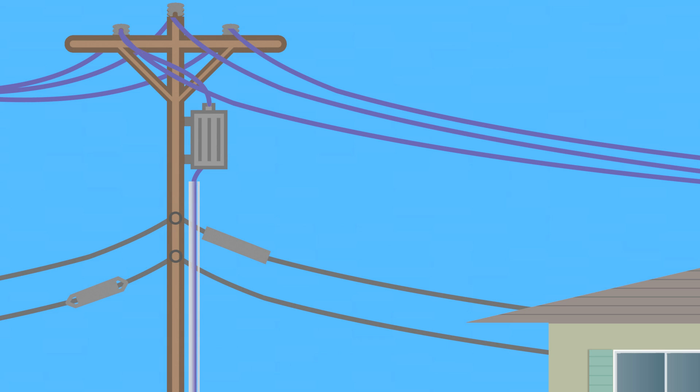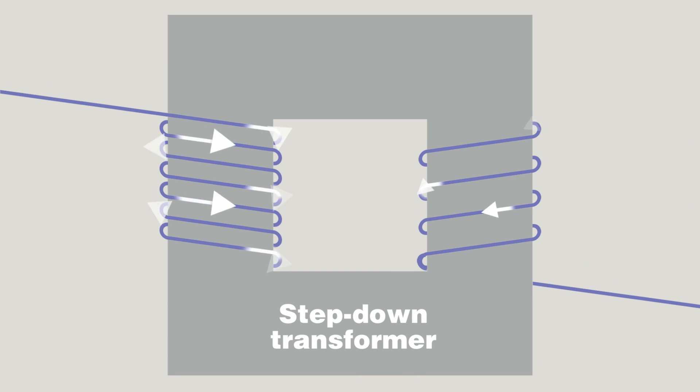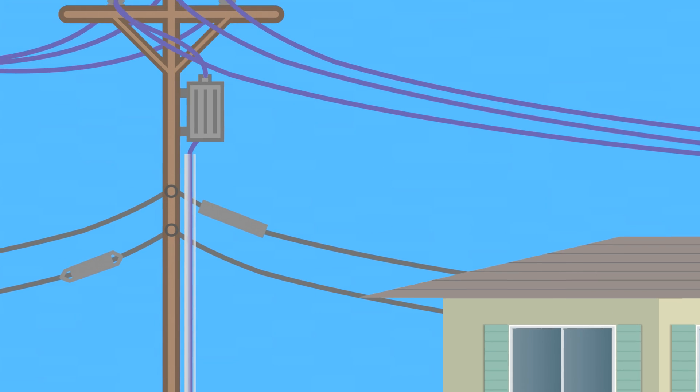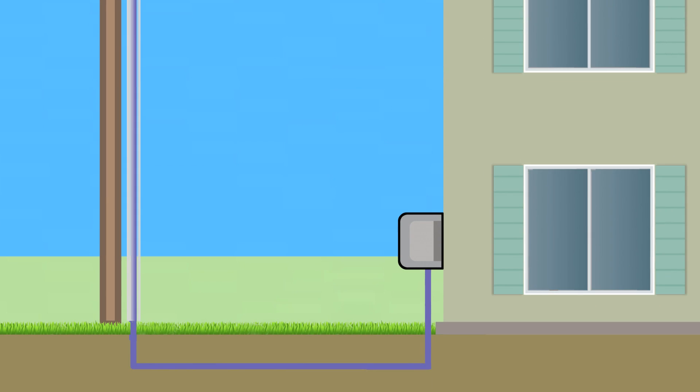So how does electricity get from the pole to your home or business? The voltage is lowered one more time at a transformer to make the electricity compatible with your appliances, phone chargers, and other devices. Now perfectly matched to meet your needs, electricity travels into your home on what's called a tap line.